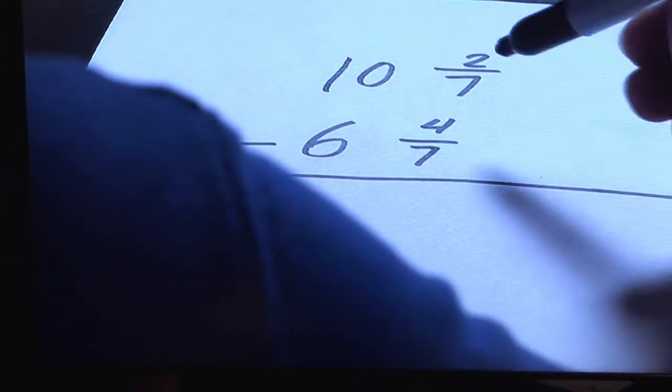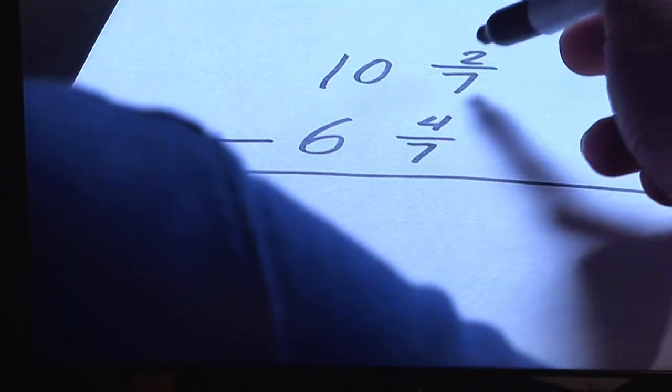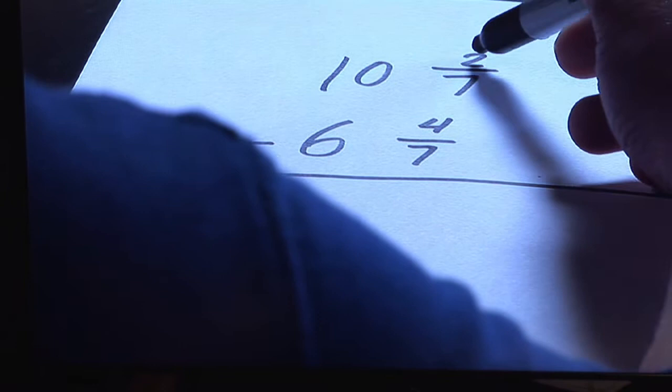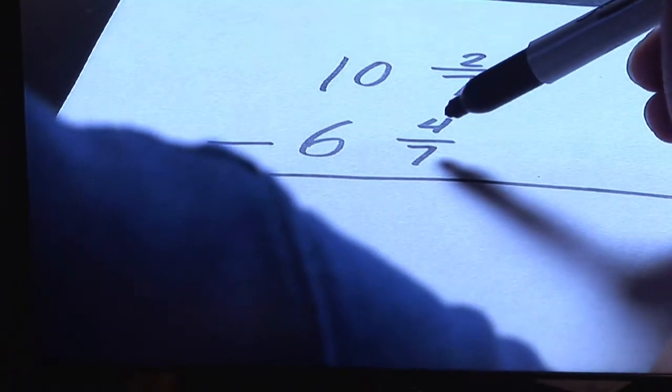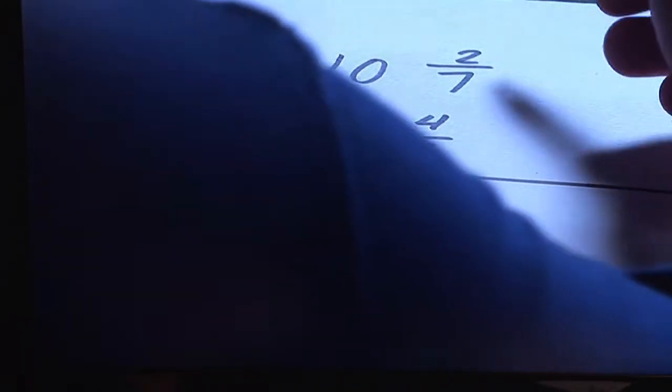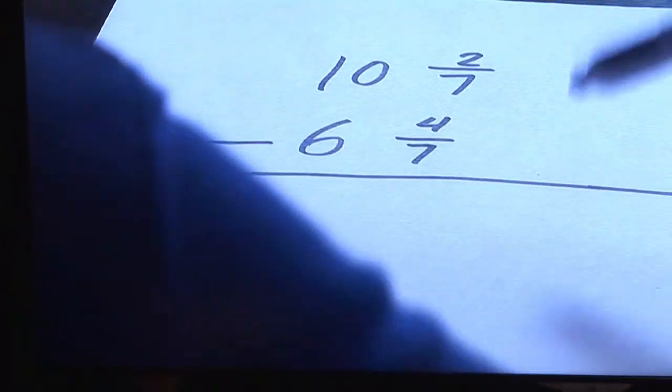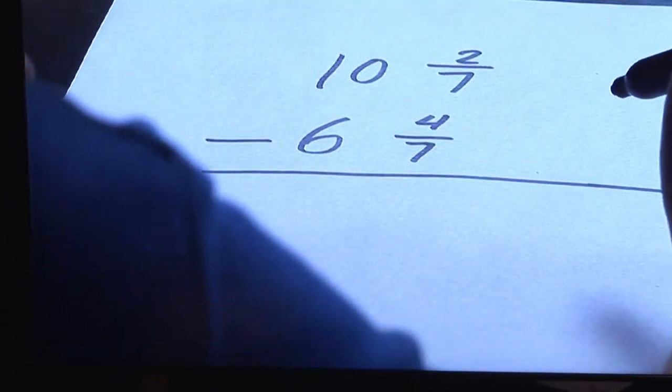Now, unfortunately, this four sevenths is larger than the two sevenths, so you can't subtract two sevenths minus four sevenths. So what you have to do whenever the top fraction portion is smaller, you have to regroup or you have to borrow.